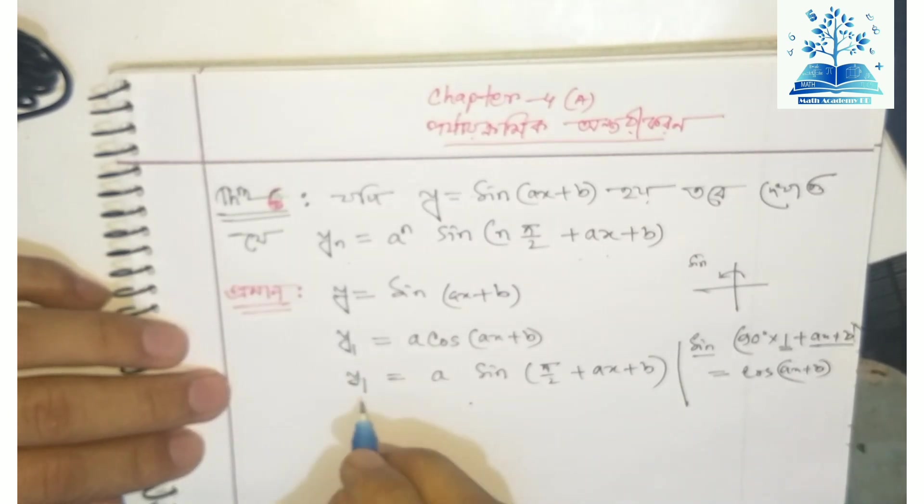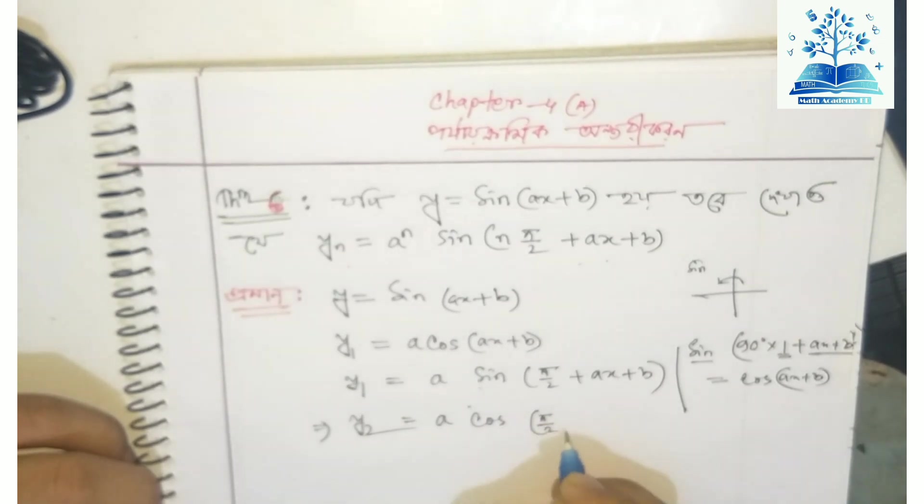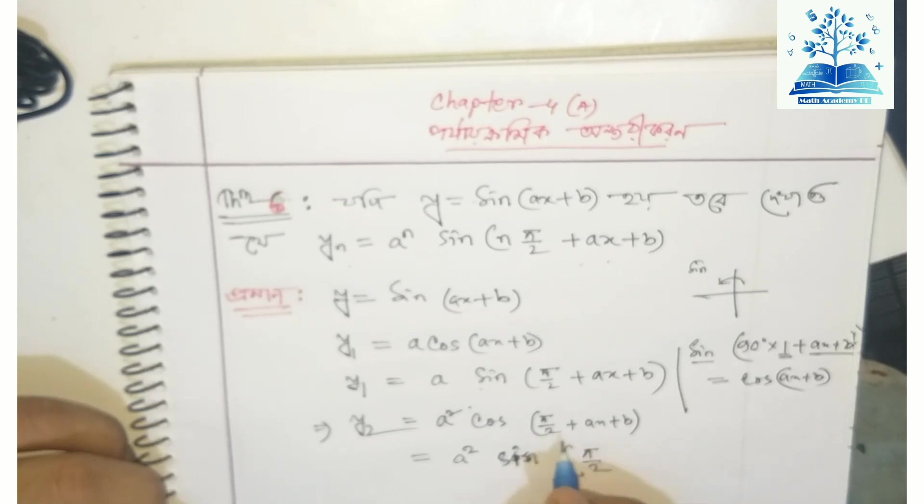Now we can write y₂. If we differentiate cos(x), we get -sin(x). Since cos becomes -sin when differentiated, we can write this as: y₂ = a² cos(π/2 + x + b).